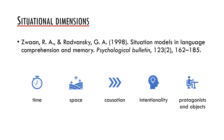Zwaan and Radvansky say that if the event occurs within the same time frame as the events in working memory, there is overlap on the temporal dimension. If the event takes place within the same spatial region, there is a spatial overlap. If it involves the same entity such as a person or an object, there is entity overlap. If it is causally related to the previous event or events, there is causal overlap. And if it is part of the same goal plan structure, there is motivational overlap.